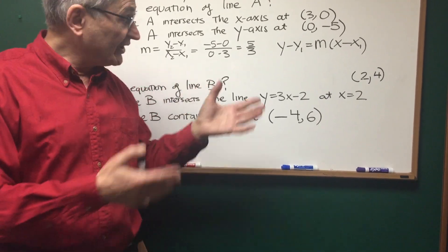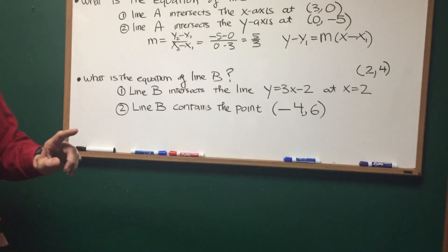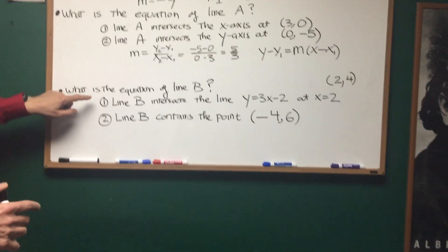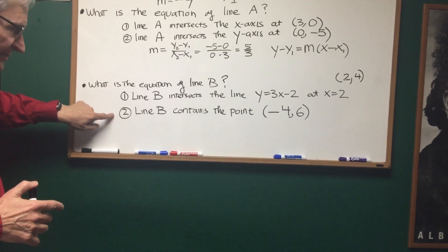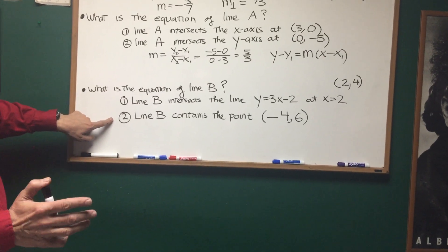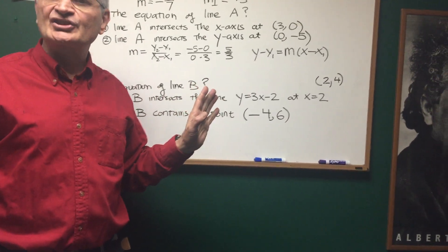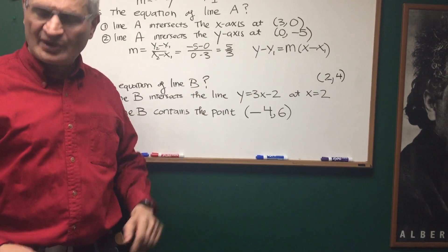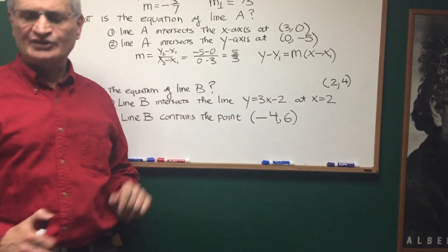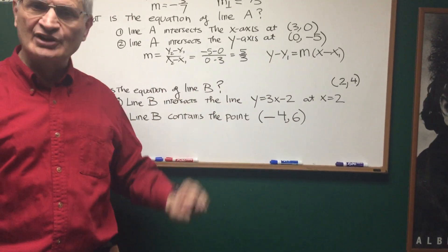It's sufficient to allow us to calculate the slope and therefore the equation of the line. Once again, on principle, we can say that yes, the choice that we need is choice C. Both statements 1 and statement 2 are sufficient and necessary to solve the problem. No further calculation is necessary. We have it all on the principle of two points determining uniquely the equation of a line.